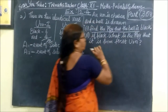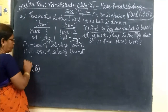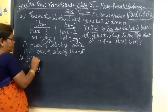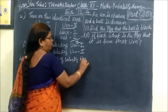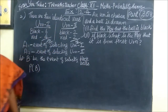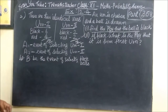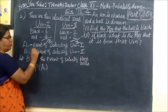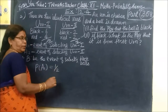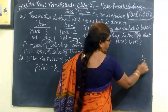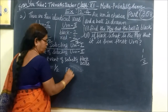The answer to the question: what is the probability of drawing a black ball? Let P be the event of selecting a black ball. That means from Urn 1 and Urn 2. The event of selecting Urn 1 is A1. The probability of selecting Urn 1, P(A1), is 1 by 2. Similarly, P(A2) is equal to 1 by 2.